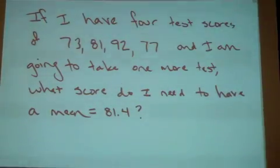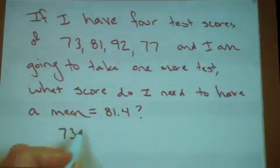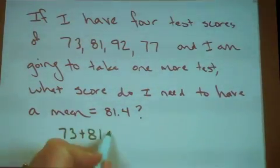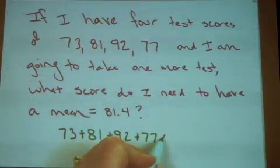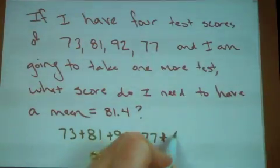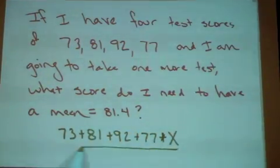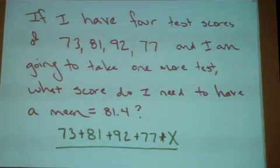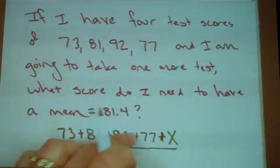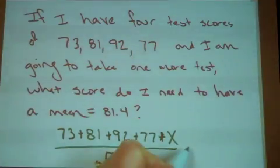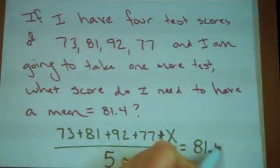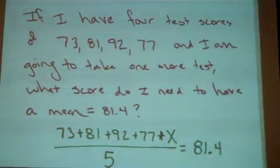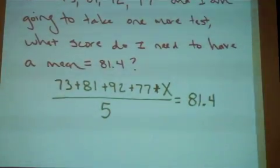So again, I need to set up the problem. I'm going to take 73 plus 81 plus 92 plus 77 plus some unknown value. Again, I'm going to call it x, and divide by however many pieces of data I have: one, two, three, four, five. And this time I want to get this kind of unusual mean, but still, the mean of 81.4. So there's my setup.